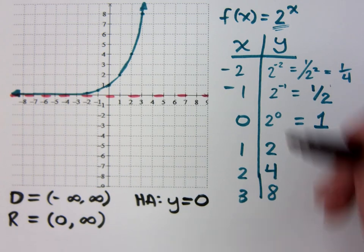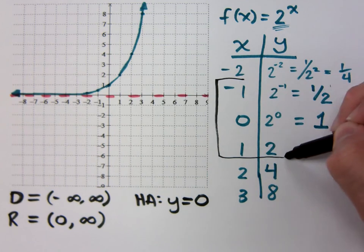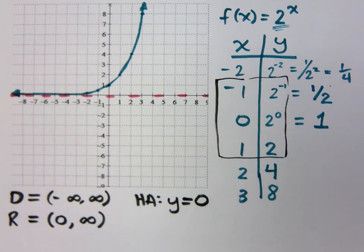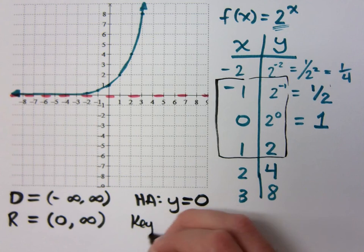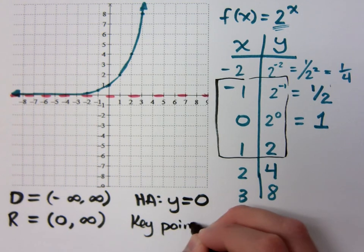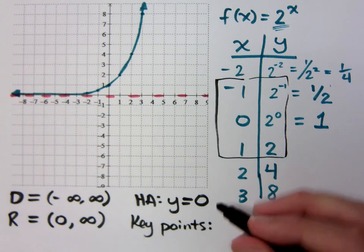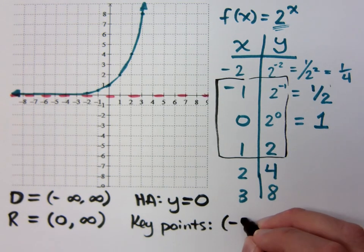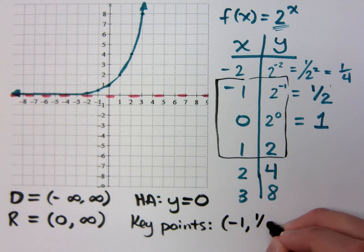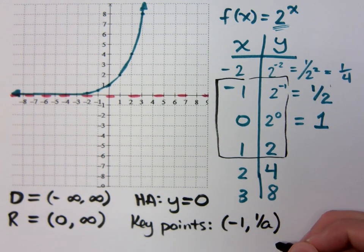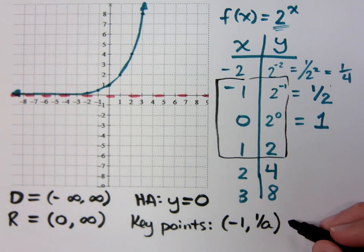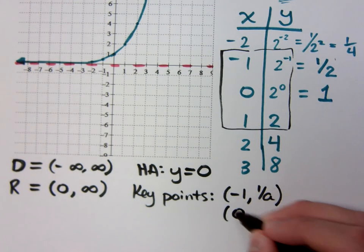These are the key points that you need to know right here. Okay. So your key points, let me list these out for you. This is going to be true for any of these exponential functions. Your key points will be negative one, one over a, where a, of course, is your base. Bless you. So if you plug in negative one, you're going to get the reciprocal, one over a.